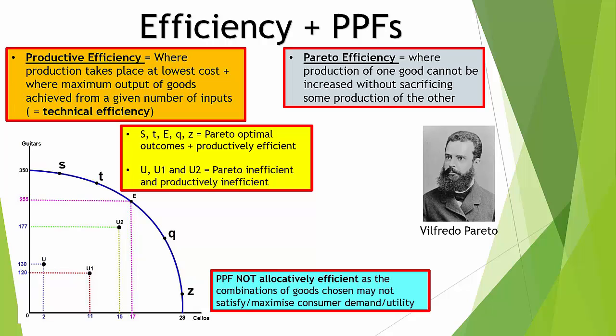Note that the PPF does not demonstrate allocative efficiency, because allocative efficiency is concerned with producing the quantity of goods and services that maximizes consumer utility or satisfies consumer demand. We can't determine which of points Z, Q, E, T, or S maximizes consumer utility — they are just points along the PPF, so we don't know which represents the allocatively efficient level of production.